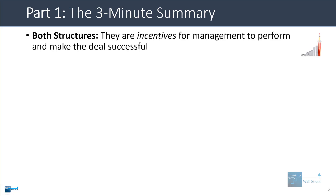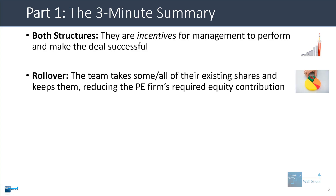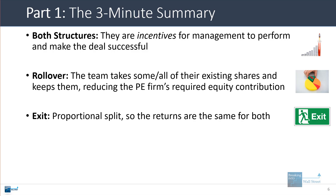Both of these structures are incentives for the management team in a deal to perform well and make the deal successful. The difference is that in a rollover, the existing management team takes some or all of their existing shares and keeps those shares, which reduces the private equity firm's required equity contribution. In the exit, it's a proportional split — so if management owns 10% and the PE firm owns 90% upfront, management gets 10% at exit and the PE firm gets 90%. The IRRs and multiples are the same for both.